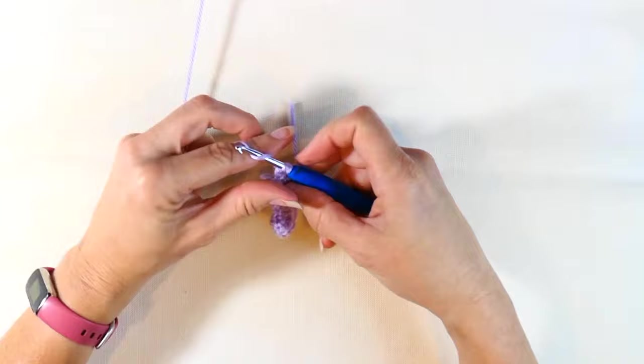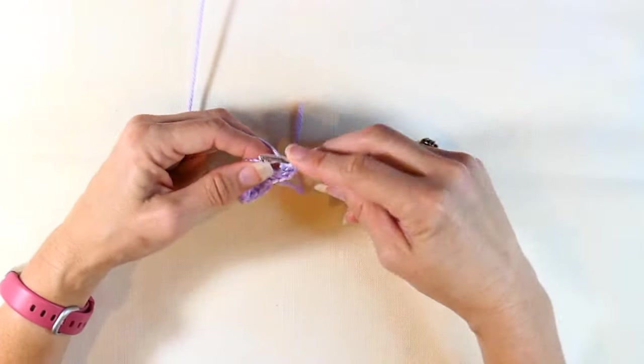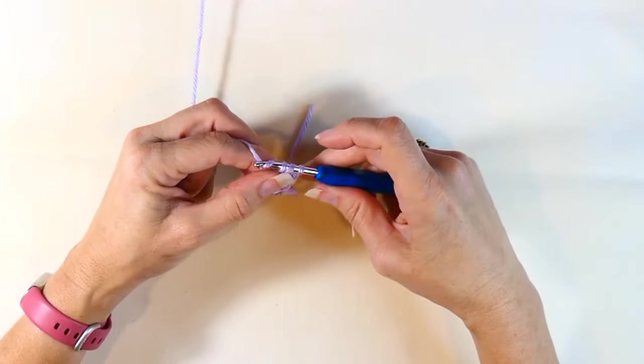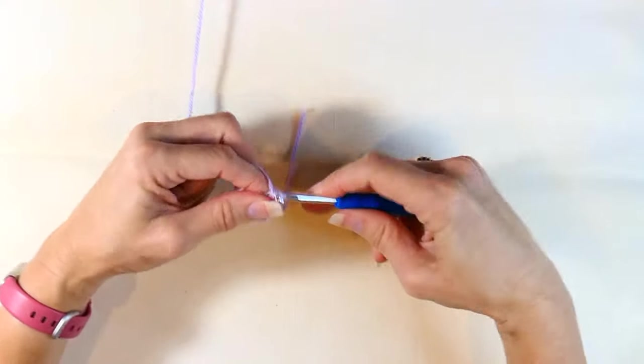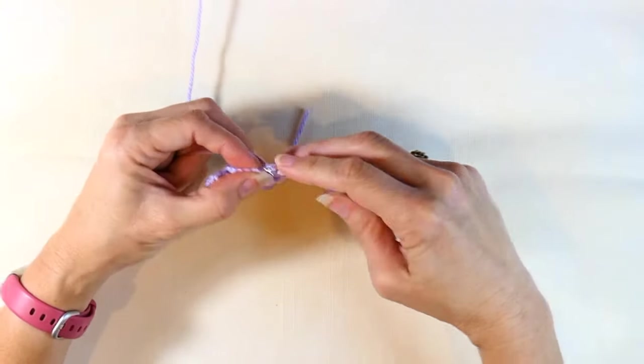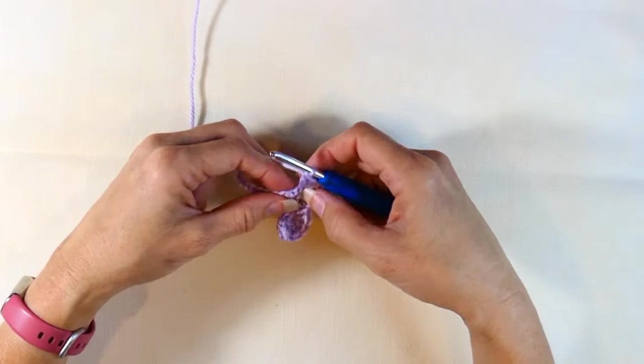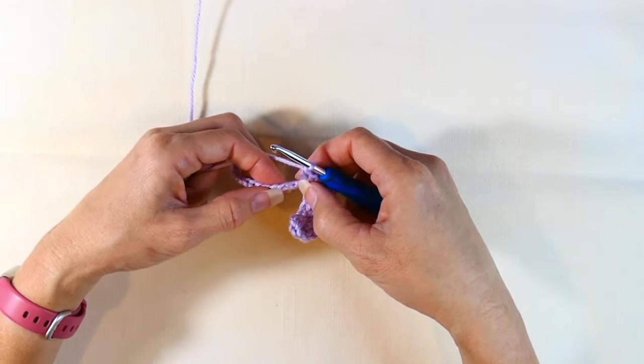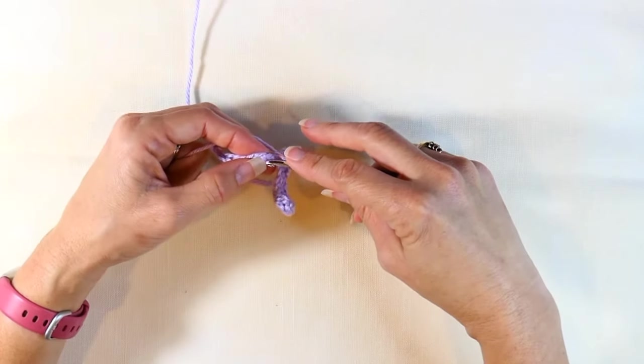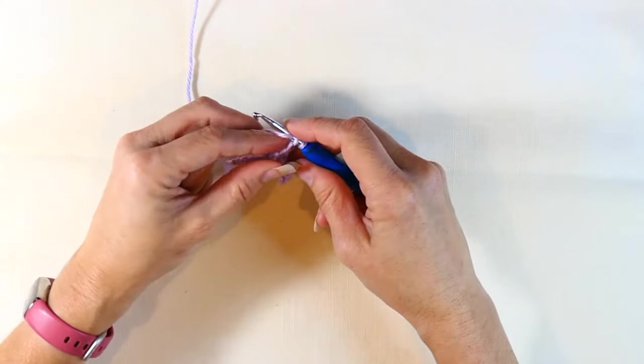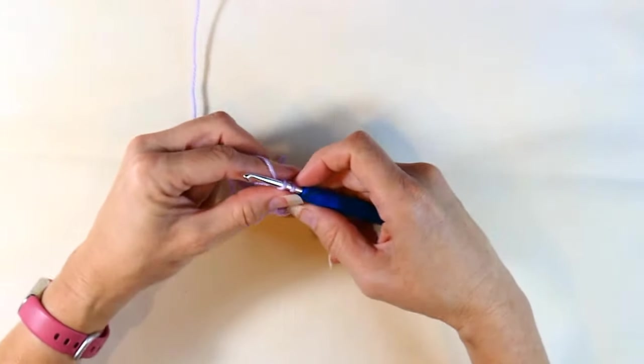And when you get to the end, what you really want to make sure is that you have 3 chains or 3 stitches left over. So you can skip 2, and you can do a slip stitch or even a chain stitch into that third from your hook. That way it finishes off that stitch, and it makes it look nice and round and like a shell.